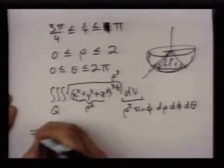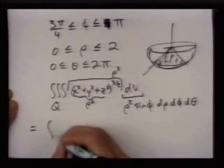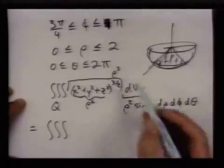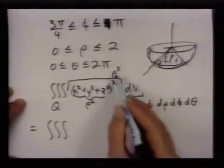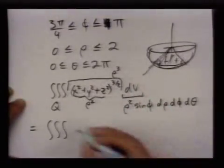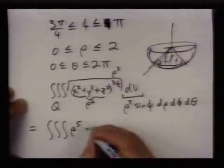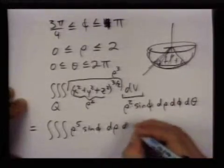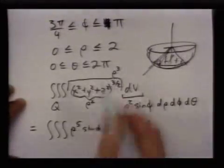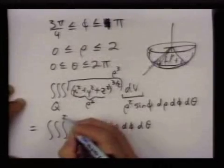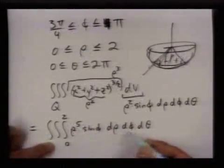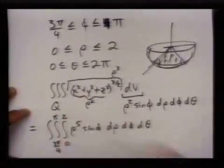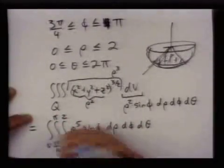So this becomes the following triple integral: I have rho cubed times rho squared which gives you rho to the fifth, times the sine of phi d rho d phi d theta. Rho goes from zero to two, phi goes from three pi over four to pi, and theta goes from zero to two pi.